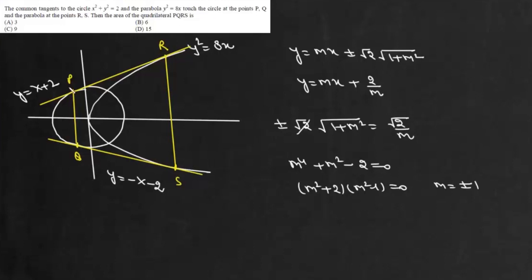Now we have to find this point of contacts P and Q. Now suppose this P is x1, y1. Then equation of tangent to this circle will be given by x x1 plus y y1 minus 2 equals 0 and we will compare it with this x minus y plus 2 equals 0. So from here, we get x1 upon 1, y1 upon minus 1, it is equal to minus 1. So this point of contact is minus 1 comma 1. So this P is minus 1 comma 1 and this Q is minus 1 comma minus 1.